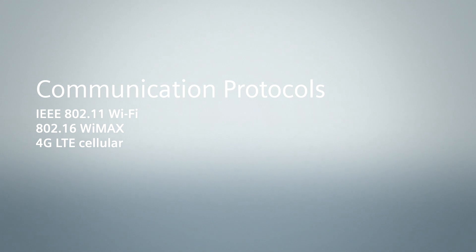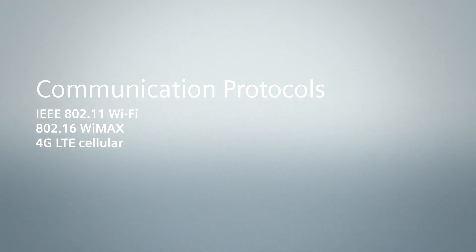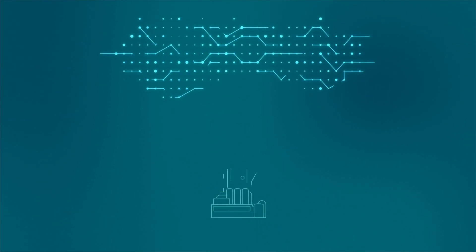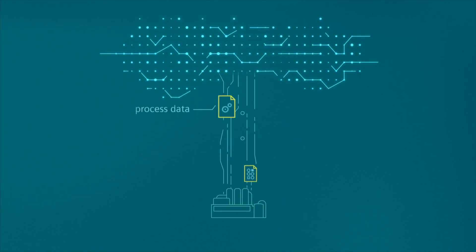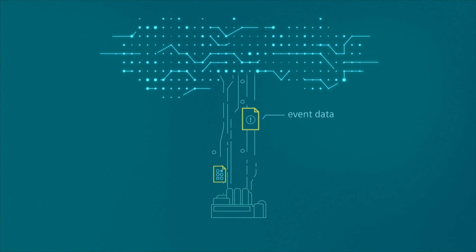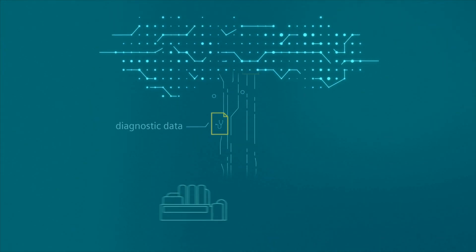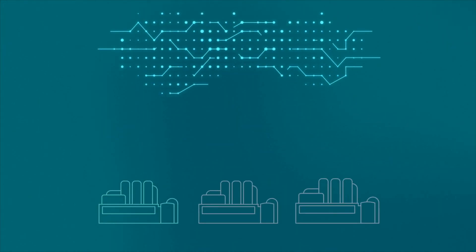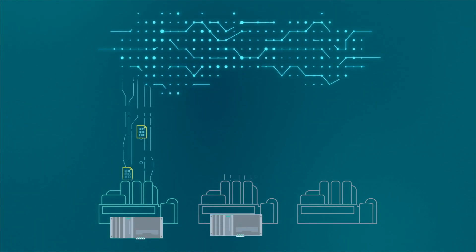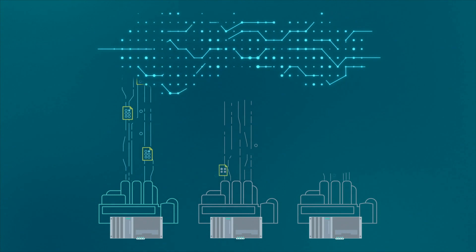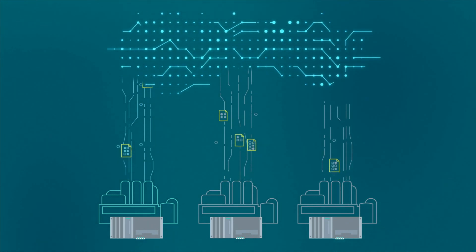Communication protocols can include IEEE 802.11 Wi-Fi, 802.16 WiMAX, 4G LTE cellular, and — in especially remote locations — satellite communications. Cloud platforms, modeled similarly to electric utilities, provide a combination of computing, storage, networking, cybersecurity, and application utilities with virtually unlimited on-demand scalability for plants and associated pumping stations.